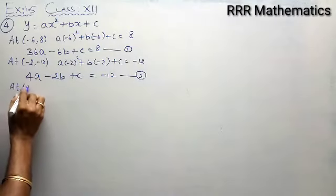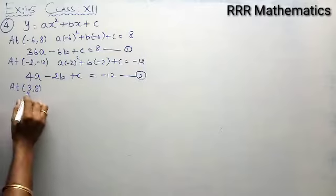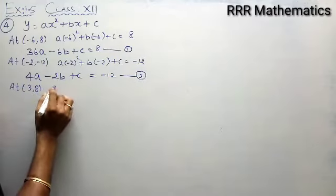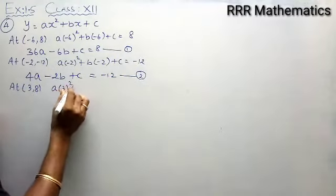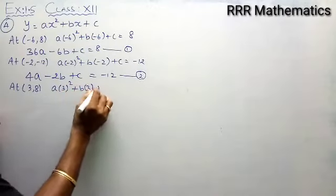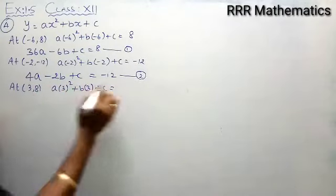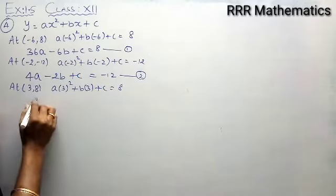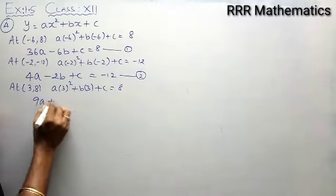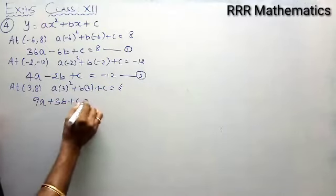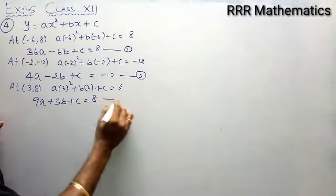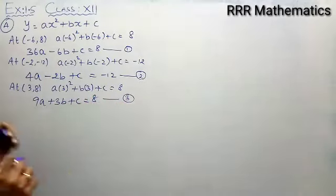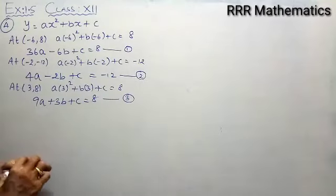Next, the third point, (3, 8). x = 3, y = 8. Substitute: a(3²) + b(3) + c = 8. Simplify: 9a + 3b + c = 8. So in this case, I am getting 3 equations in terms of a, b, c by substituting the given points.